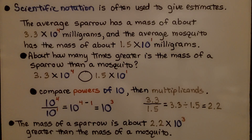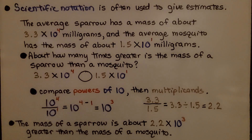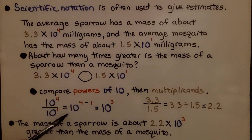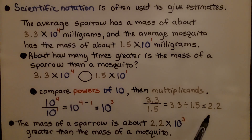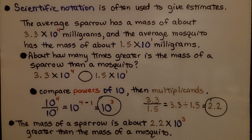Scientific notation is often used to give estimates. The average sparrow has a mass of about 3.3 times 10 to the fourth power milligrams, and the average mosquito has a mass of about 1.5 times 10 to the first power milligrams. About how many times greater is the mass of a sparrow than a mosquito? We compare the powers of 10: 10 to the fourth over 10 to the first equals 10 to the third power. We compare the multiplicands: 3.3 divided by 1.5 gives us 2.2. The mass of a sparrow is about 2.2 times 10 to the third power greater than the mass of a mosquito.